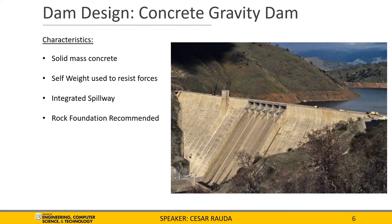To begin the dam design portion, first we will go over what a concrete gravity dam is. A concrete gravity dam is a dam constructed of solid mass concrete that uses its own self-weight to resist overturning and sliding forces. The concrete gravity dam can have the spillway and/or the intake tower integrated straight into the dam, with the spillway being integrated directly down the middle of the dam and having an intake tower just to the left of the spillway. Because they are so heavy, they require strong foundations and are commonly built upon rock foundations.